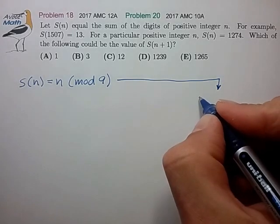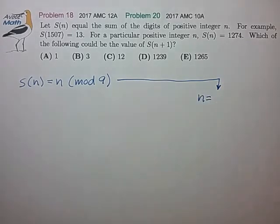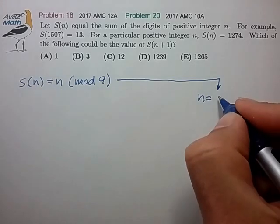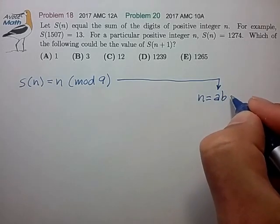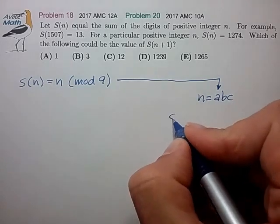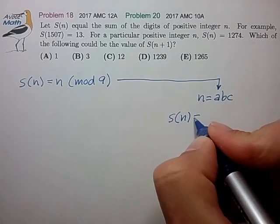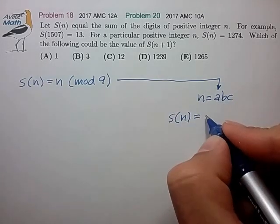So let's take an example where we have a number n of a three-digit number which we'll represent with the digits a, b, and c.